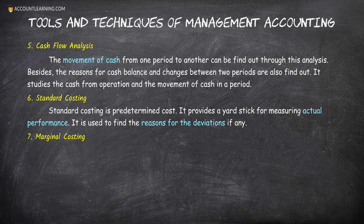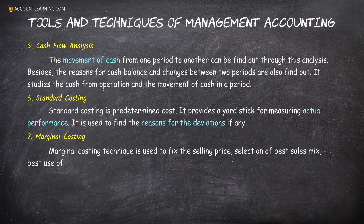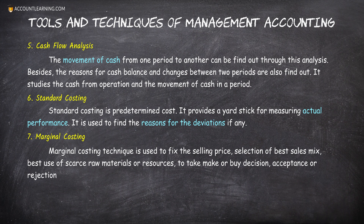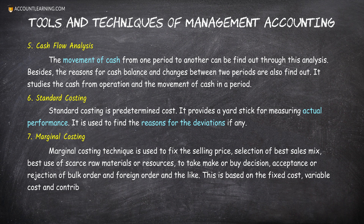7. Marginal Costing. Marginal Costing technique is used to fix the selling price, selection of best sales mix, best use of scarce raw materials or resources, to take make or buy decisions, acceptance or rejection of bulk order and foreign order and the like. This is based on the fixed cost, variable cost and contribution.